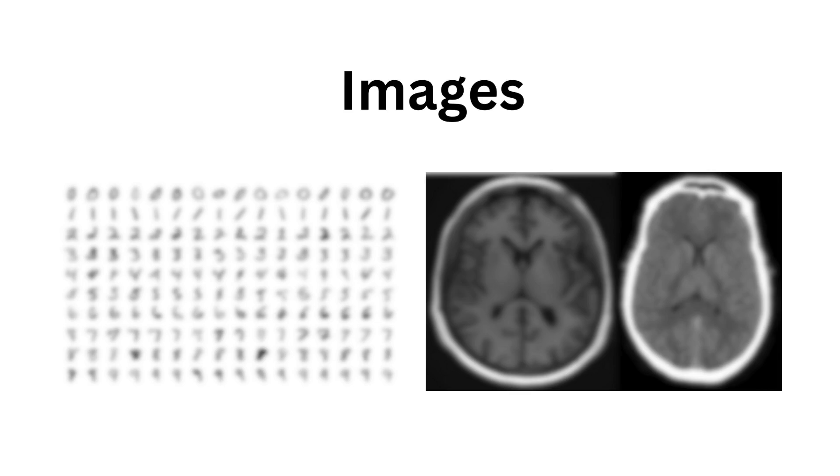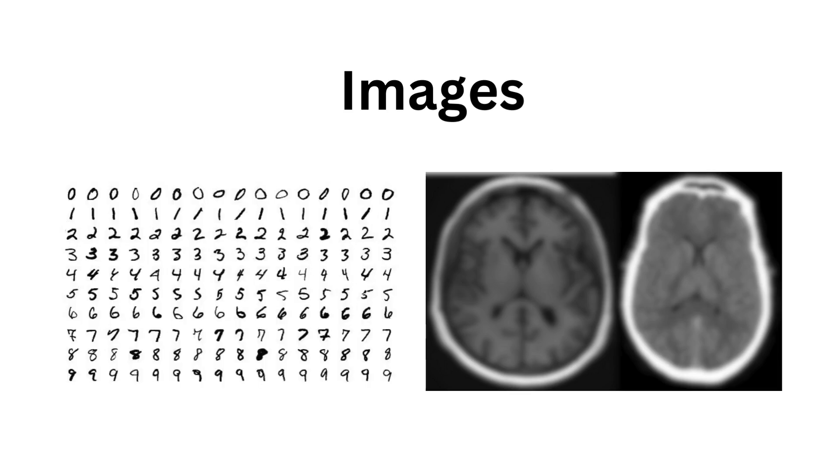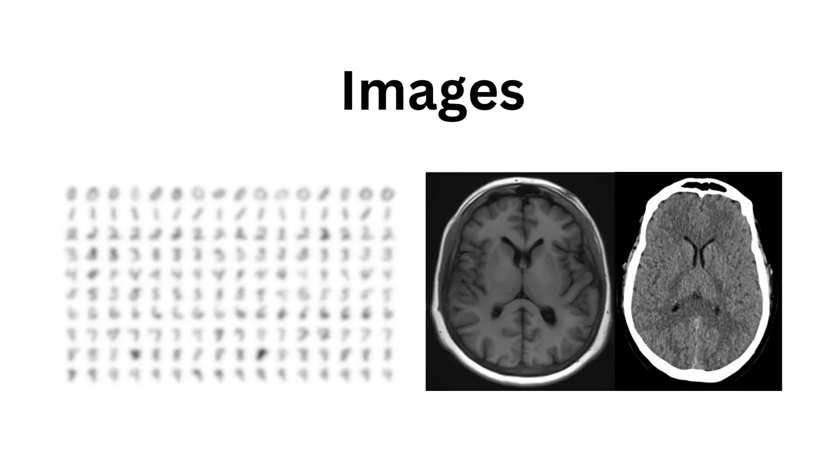The second type of data you will usually encounter in deep learning is images. On the left, you see a bunch of digit images from the MNIST dataset. On the right, you see some MRI brain scans, which are grayscale pixel images.